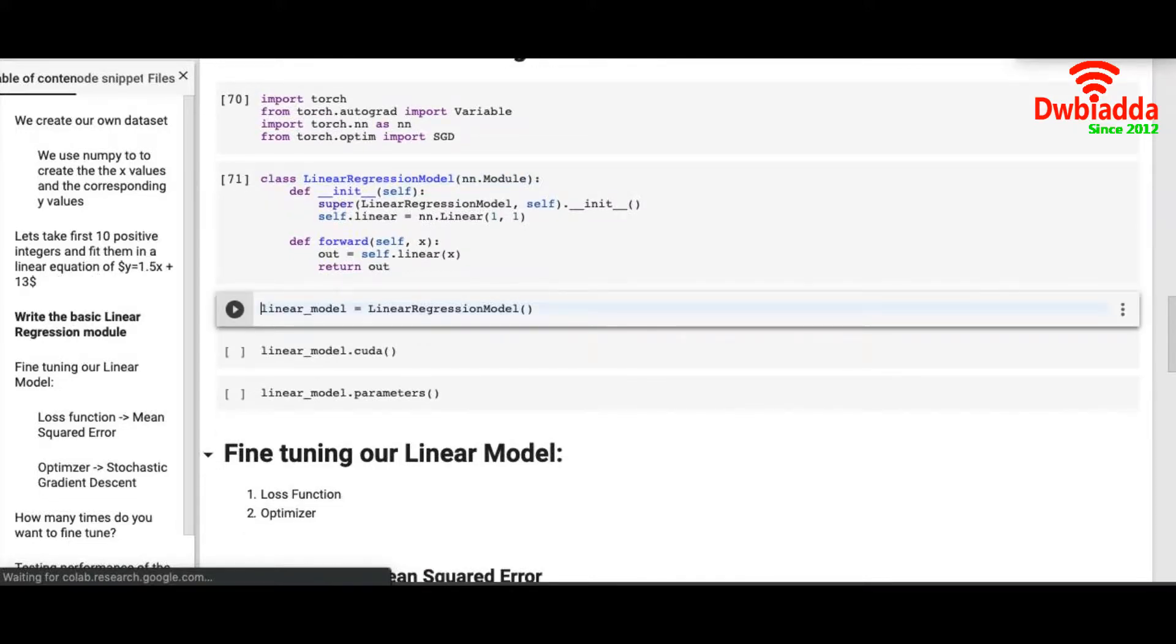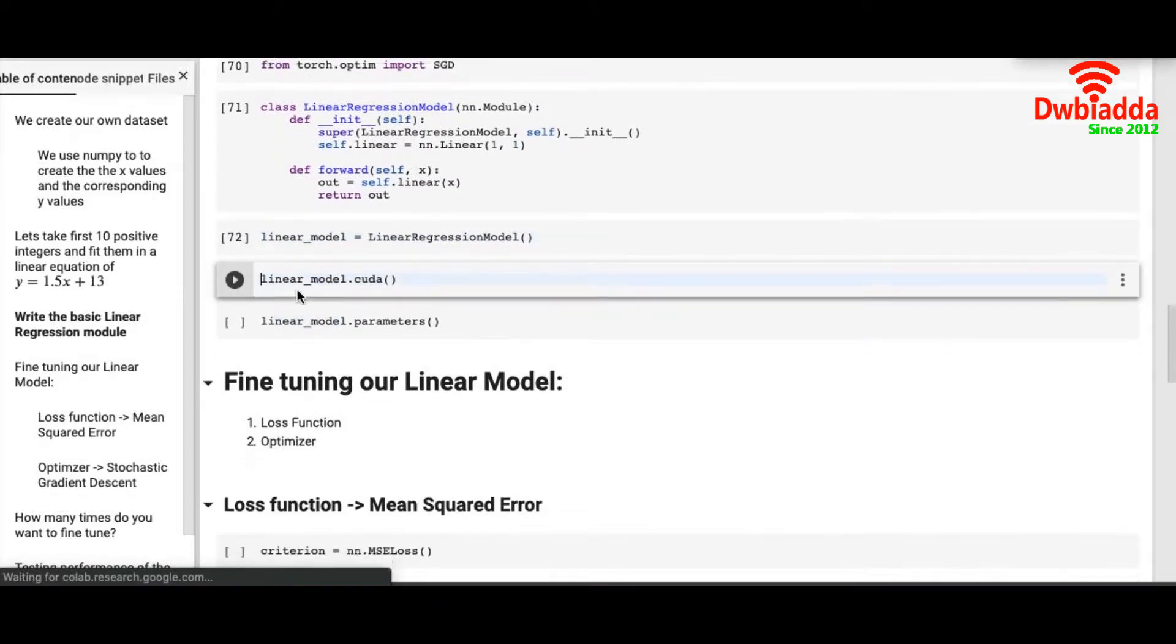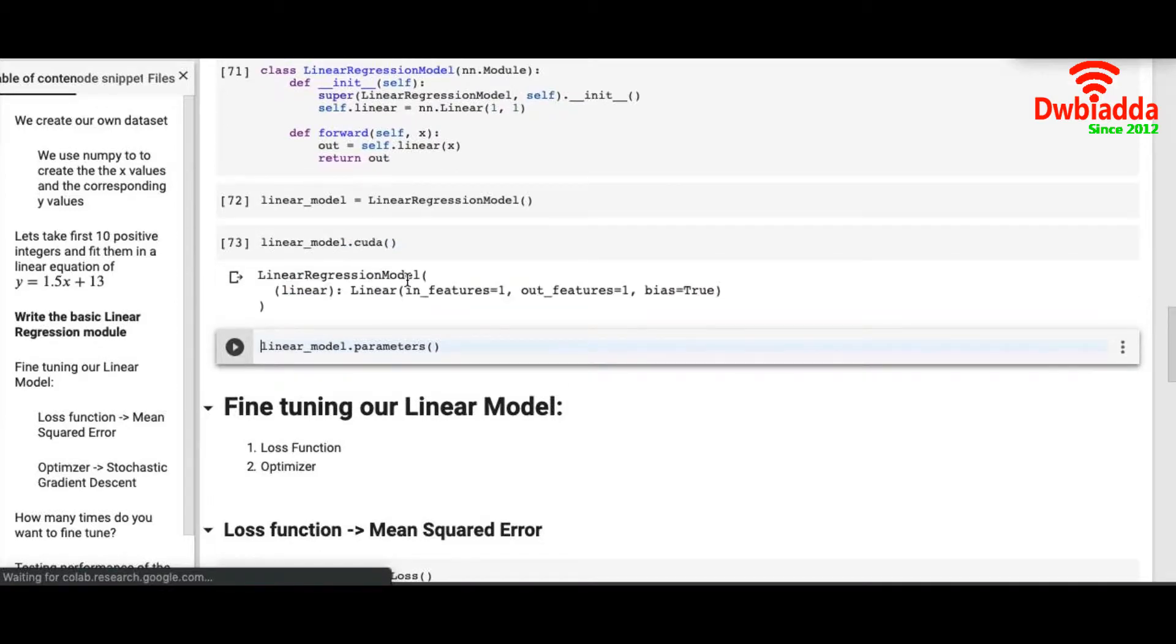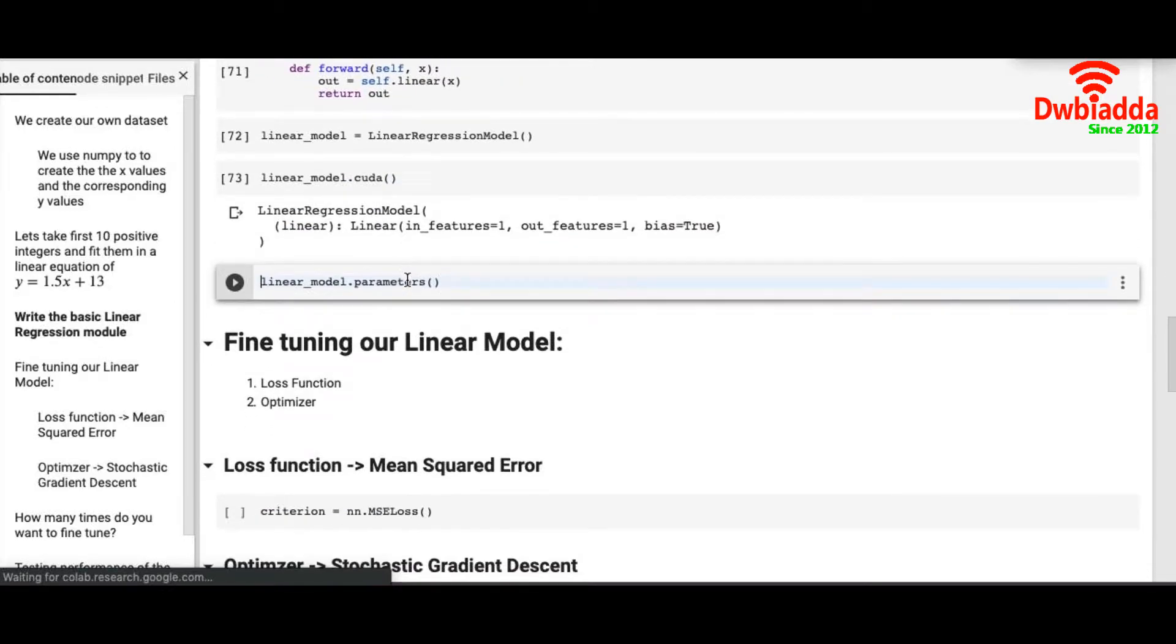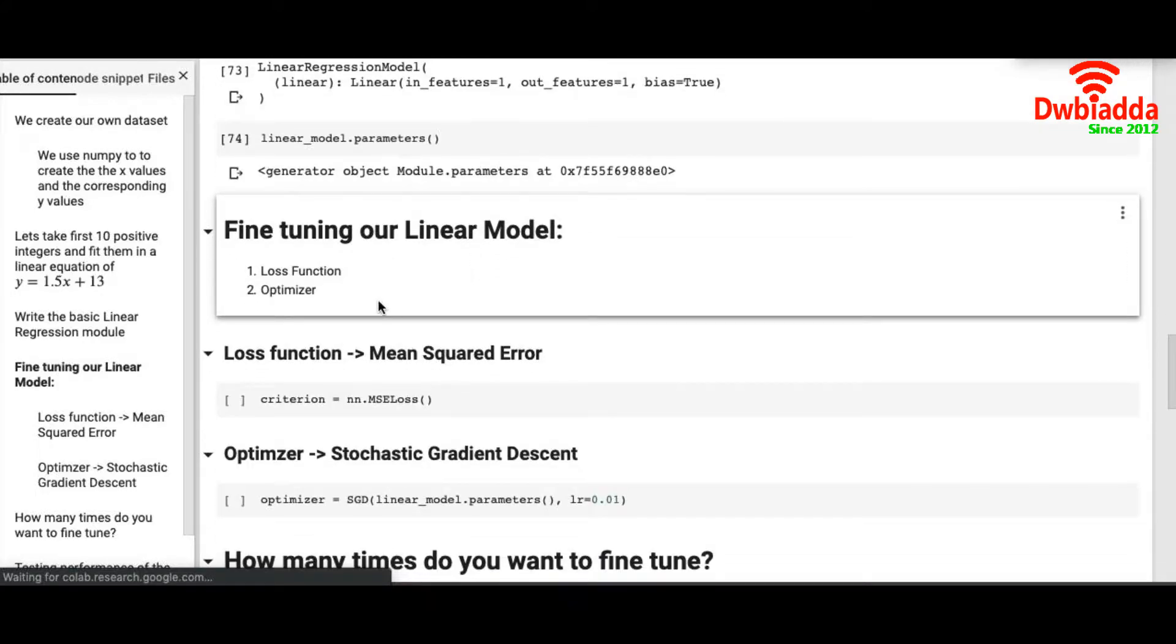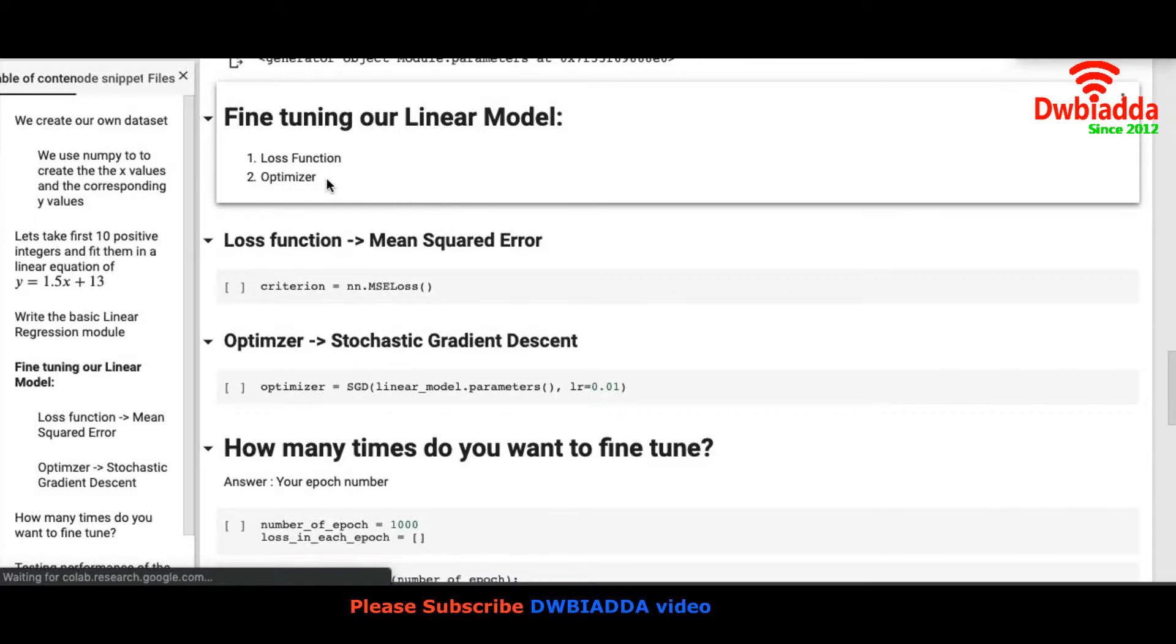Once we have created our linear regression model class we will instantiate it under linear underscore model. We will call CUDA so that we can use GPUs on our model. You can also check the parameters.